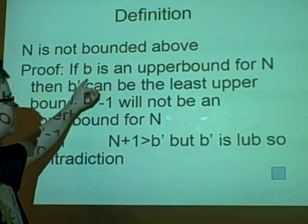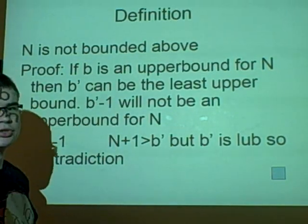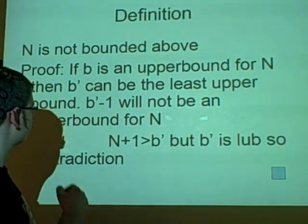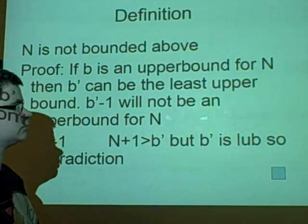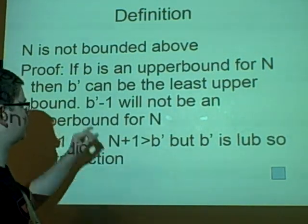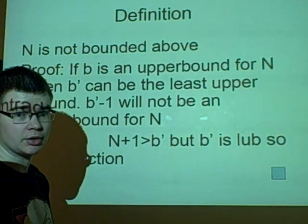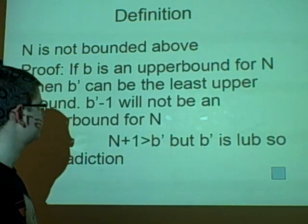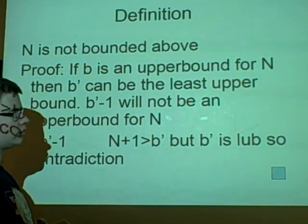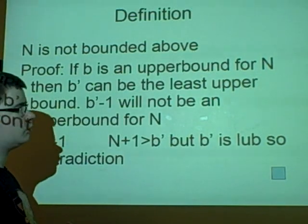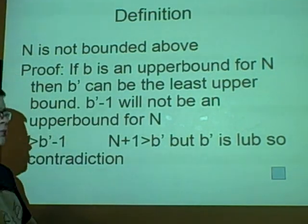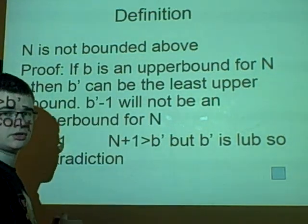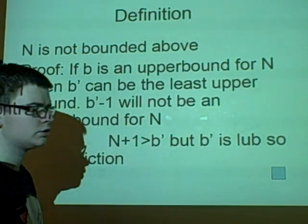if b was an upper bound for n, then we can say b' for instance could be the least upper bound. Agreed? Now, therefore b' minus 1 will not be an upper bound because it's less than the least upper bound or the supremum.